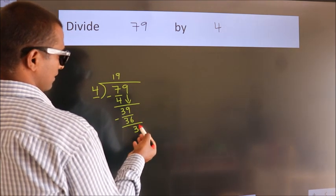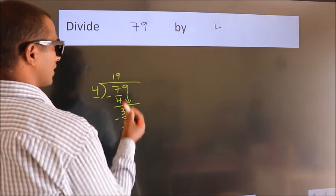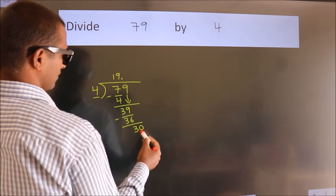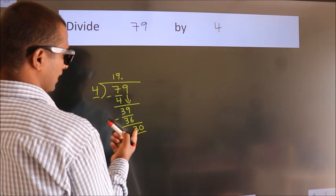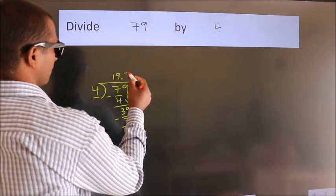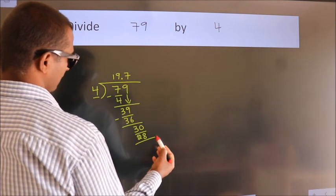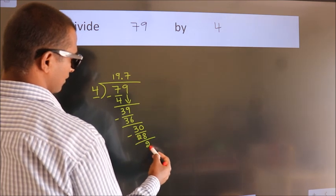After this, there are no more numbers to bring down. So what we do is put a dot and take 0. So we have 30. A number close to 30 in the 4 table is 4 sevens, 28. Now we subtract and get 2.